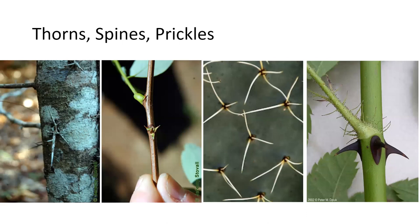On the far left we have honey locust — do you think that is a thorn, a prickle, or a spine? In the center we have paired stipular spines, possibly for Robinia pseudoacacia — I can see the swollen leaf bud which tells me it's Fabaceae. Then I wanted to show a picture of a cactus because those have true spines — you can see the node or bud on the cactus pad, and the spines are emerging from that. That's actually leaf tissue, which is why they're considered spines. On the far right, we have prickles — just in the surface of the stem, you can break them off easily. That's an example from rose.